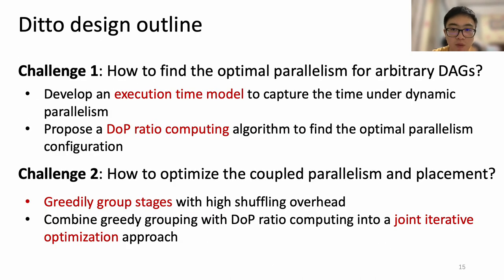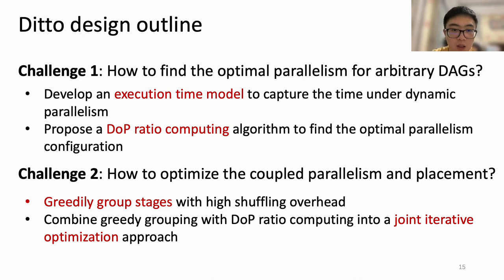This slide provides an overview of how DETO addresses these challenges. For challenge 1, we develop an execution time model to capture the time under dynamic parallelism, and propose a DOP ratio computing algorithm to find the optimal parallelism configuration. For challenge 2, we greedily group stages with high shuffling overhead and combine it with DOP ratio computing into a joint iterative optimization approach. Now I'm going to discuss these designs in detail.